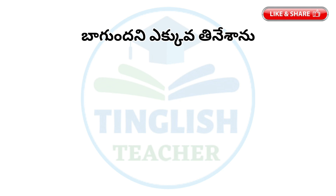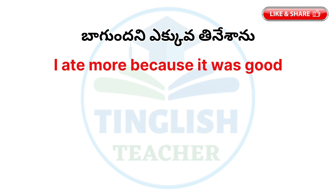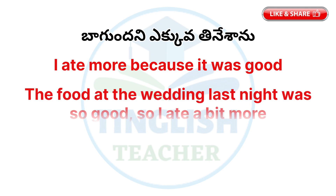Sentence number five: I ate more because it was good. You can also say: I ate too much because it was good. Example: The food at the wedding last night was so good, so I ate a bit more. Or: The food at the wedding last night was very good, so I ate a little more.